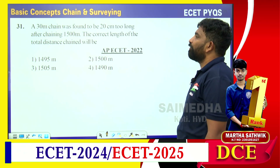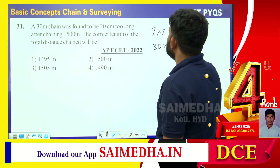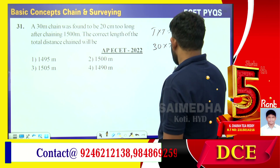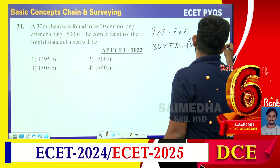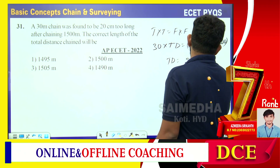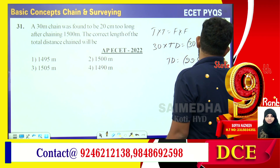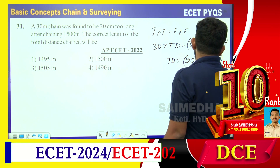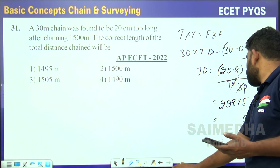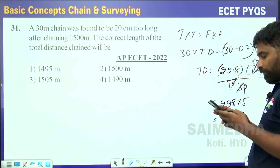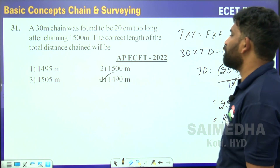A 30-meter chain was found to be 20 centimeters too long after chaining a 1500-meter distance. Using true × true = false × false: one true length is 30 m, false length of chain = 30 − 0.2 = 29.8 m. True distance = (29.8 × 1500) ÷ 30 = 29.8 × 50 = 1490 meters.